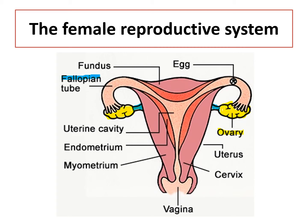Next, let us look at the fallopian tubes. There are two fallopian tubes that connect onto your ovaries by finger-like structures called fimbria, highlighted in blue, which help to capture the egg and let it enter the fallopian tube once the egg is released by the ovary during ovulation. Fertilization in humans also takes place at the fallopian tubes. The fallopian tubes contain cilia to create a wave-like motion and are also muscular, so they can undergo peristalsis to move the resulting zygote towards the uterus.